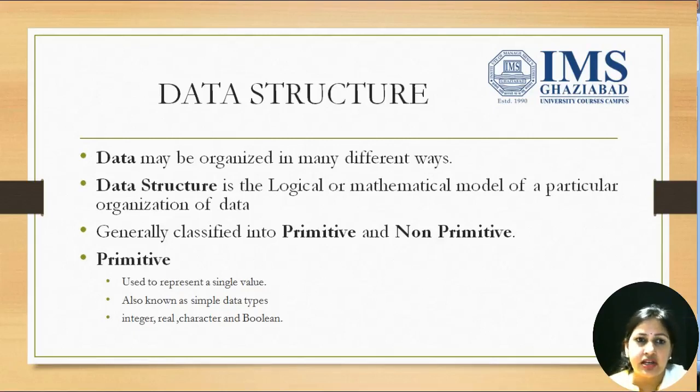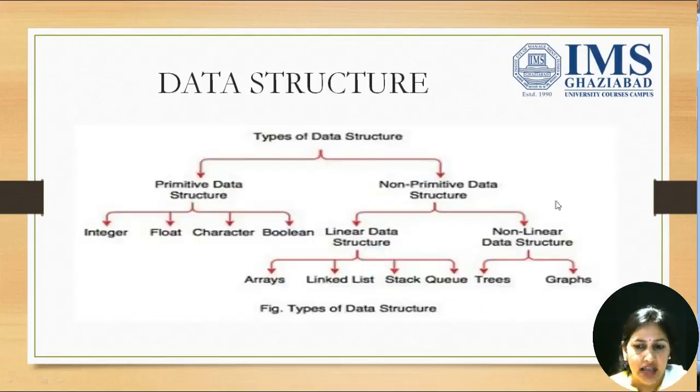Data structures are generally classified as primitive data structure and non-primitive data structures. As we can see in the diagram, primitive data structures can store only a single value: integer, float, character, boolean.